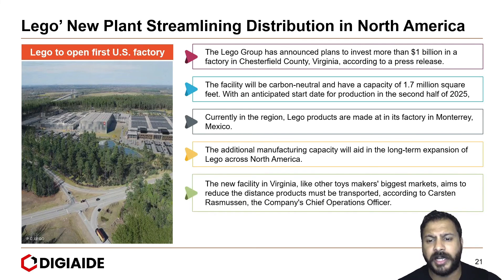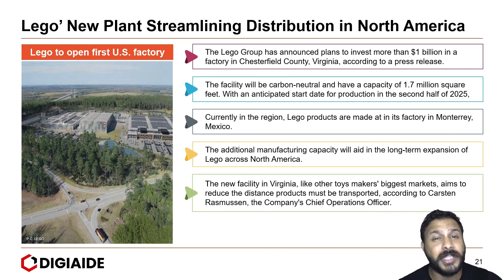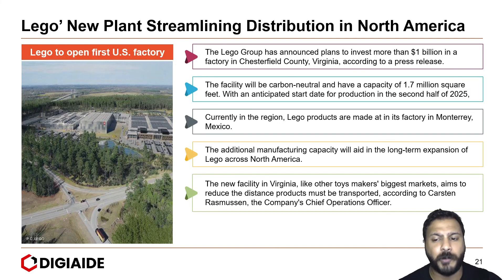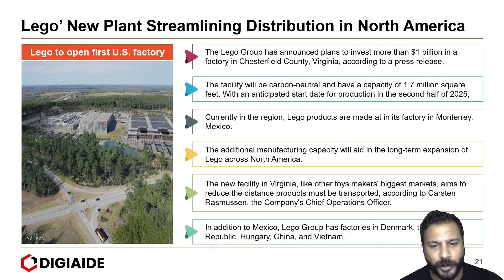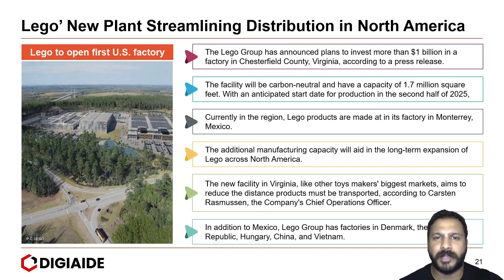The new facility in Virginia, like other toy makers' biggest market, aims to reduce the distance products must be transported, according to Karsten Rasmussen, the company's chief operating officer. In addition to Mexico, LEGO Group has factories in Denmark, Czech Republic, Hungary, China, and Vietnam.